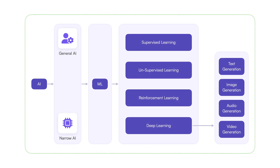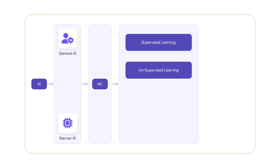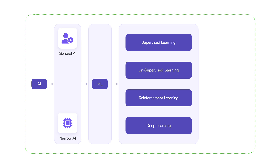Here we have organized those different items into a grouping that helps understand the different items involved in artificial intelligence. There's narrow AI and general AI that are part of AI. Narrow AI is supposed to help us solve specific tasks, while general AI is supposed to mimic human intelligence. Then we have machine learning, which is a branch of artificial intelligence, with different types of learning: supervised, unsupervised, reinforcement, and deep learning.